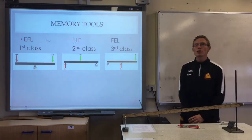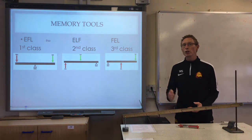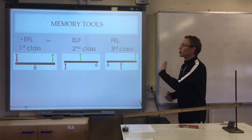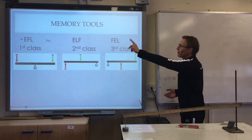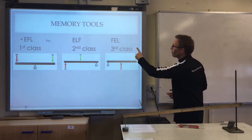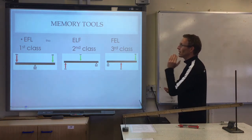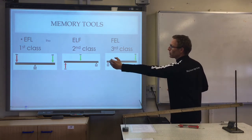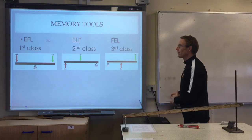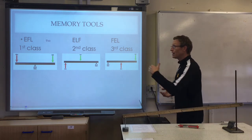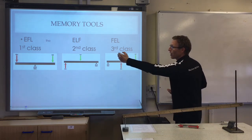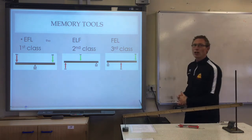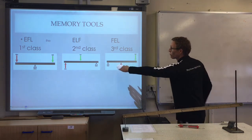I've got a couple of memory tools to help you remember the order of each lever. The first is a little saying: 'Ethel the elf fell.' A first class lever is Ethel — effort at one end, fulcrum in the middle, load at the other end. Elf is a second class lever — effort at the end, load in the middle, fulcrum at the other end. And the last one, third class lever: fulcrum at one end, effort in the middle, and load at the far end.